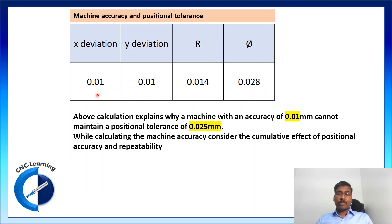So, this calculation explains why a machine with an accuracy of 0.01 mm cannot maintain a position tolerance of 0.025. So, 10 microns position accuracy of the machine and 25 microns position tolerance requirement for the part. Now, what we need to consider while calculating the machine accuracy is cumulative effect of position accuracy and repeatability.